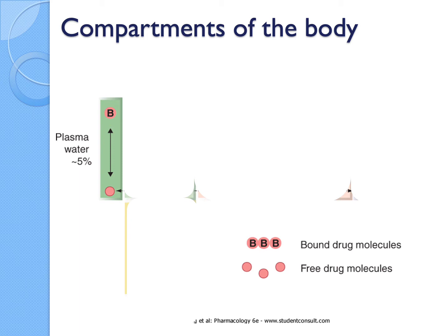Once the drug is bound to a protein, the overall structure becomes much bigger, so it cannot diffuse across different cell membranes and is basically stuck in one section, whether in the blood or elsewhere in the body. For the drug to cross membranes or bind with a pharmacological target, it has to exist as a free drug molecule.